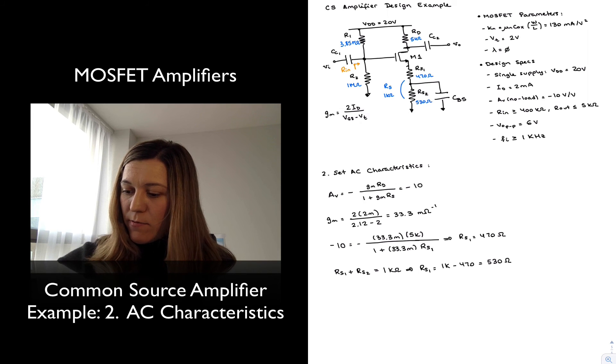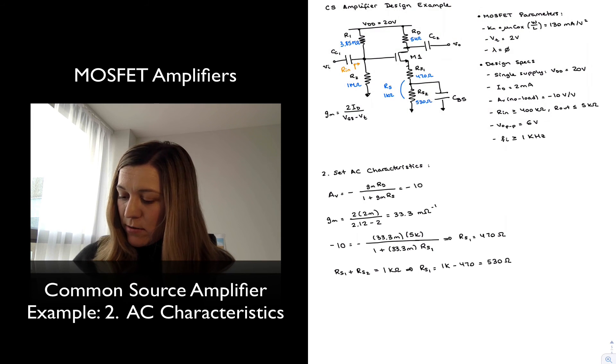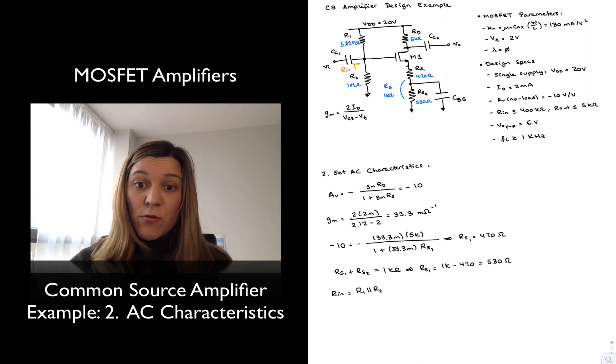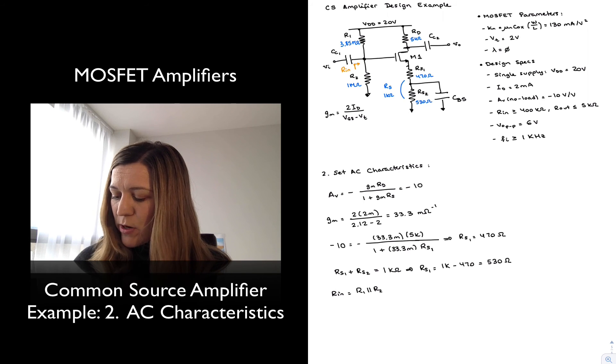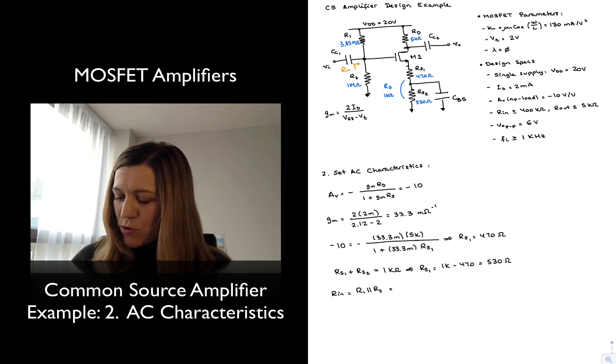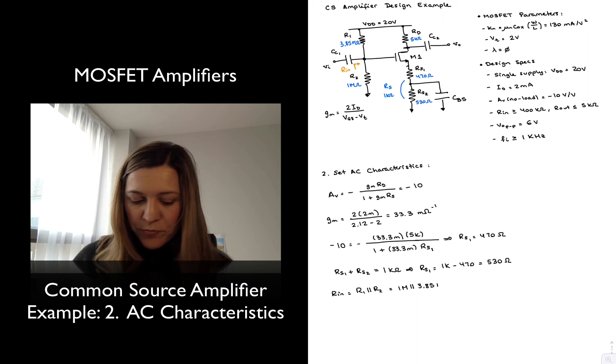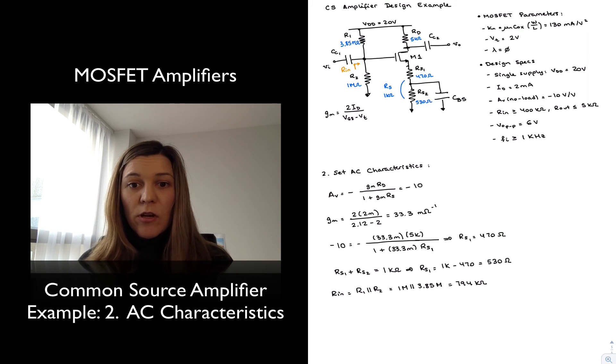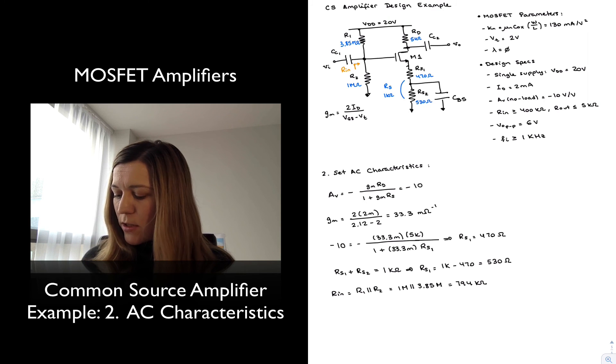All right, my R in, which is another one of the AC characteristics, is going to be set by the parallel combination of R1, R2, and the input resistance looking into the gate of the transistor, which is equal to infinity. And so simply R1 in parallel with R2, as we saw before, which is 1 meg in parallel with 3.85 meg, comes out to be 794 kOhms. And so it meets the requirement, it needs to be larger than or equal to 400 kOhms.